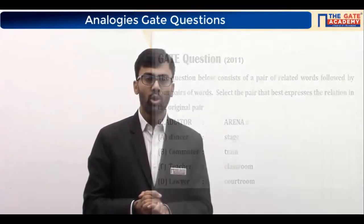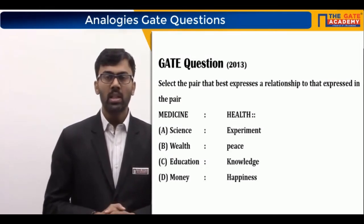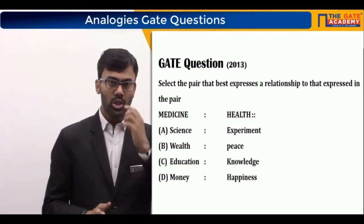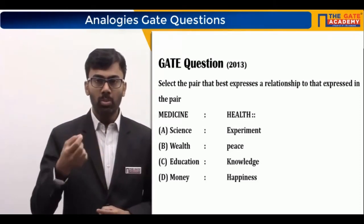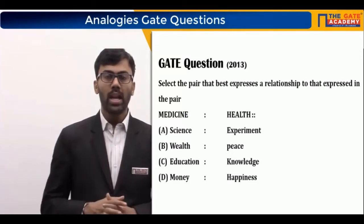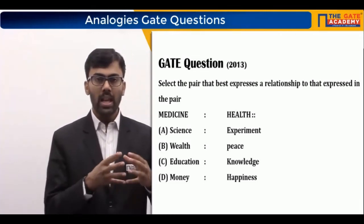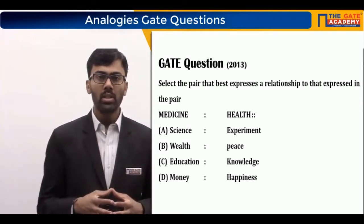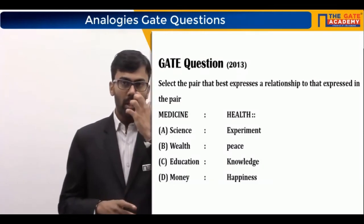The next question is also from previous years' GATE exams. The original pair is 'medicine : health.' We have to identify the choice where the pair of words has a similar relationship. Medicine is something taken or administered — through eating or injections — which improves a person's or animal's health. Medicine is used to improve health.